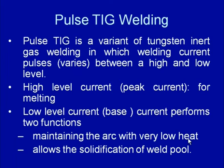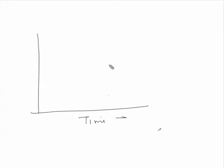In the waveform diagram, the welding current is allowed to pulse or vary between the high level and the low level. There are various waveforms depending upon the rate of rise in the current and the way by which current varies during this process.